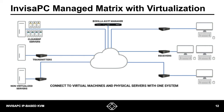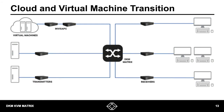An increasing trend is the use of mixed KVM platforms, where multiple products from different families are combined to provide a solution. For example, a direct-connect system such as DKM can be connected to a high-performance KVM over IP system such as InvisiPC to provide access to virtual machines to DKM-based receivers. Alternatively, users can leverage InvisiPC to provide access over WANs to DKM-attached servers. This mix adds to the challenge of managing across different types of platforms and infrastructures — which is where system management comes in.